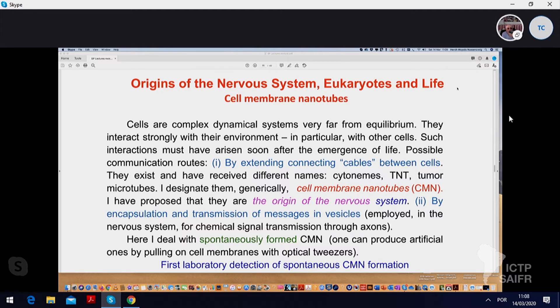Cells are complex dynamical systems that are very far from equilibrium and strongly interacting with their environment, especially with other cells. Interactions like those are extremely important, so they must have arisen soon after the emergence of life. What are possible ways to communicate between cells? One would be by extending kind of connecting cable between them. And as you now know from my previous seminars, they exist. These cables have been called different things: cytonemes, TNT, tumor microtubes. And as I already said, I have a generic name for them, which is cell membrane nanotubes, abbreviated CMN.